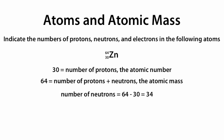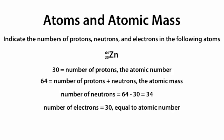The number of neutrons is equal to the atomic mass minus the atomic number, or 64 minus 30, which is equal to 34. So this atom has 34 neutrons. The number of electrons is equal to 30. The number of electrons is always equal to the number of protons, or equal to the atomic number.